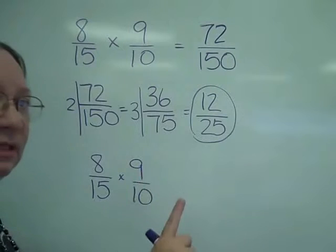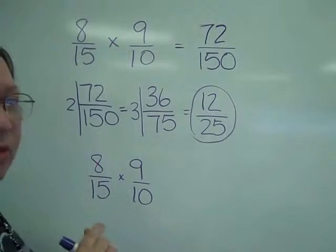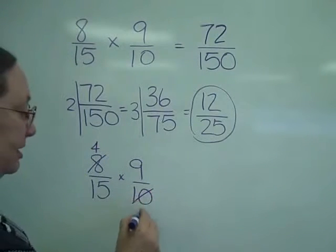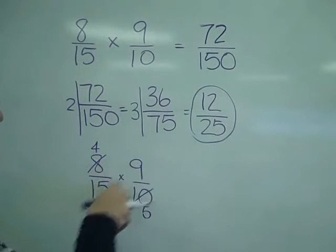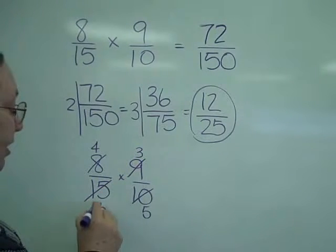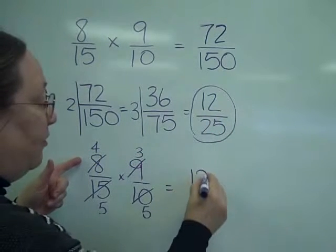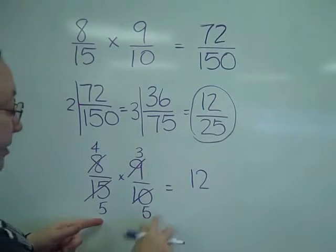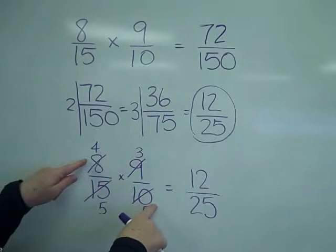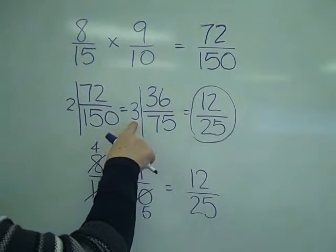It does not matter where, as long as one's at the top and one's in the bottom. Looking at the 8 and the 10, they're both even, which means 2 goes into 8 four times and 2 goes into 10 five times. Looking at the 9 and the 15: 3 goes into 9 three times, and 3 goes into 15 five times.